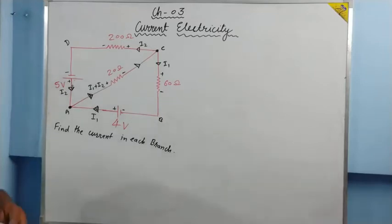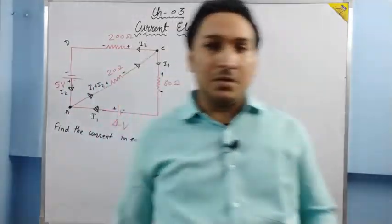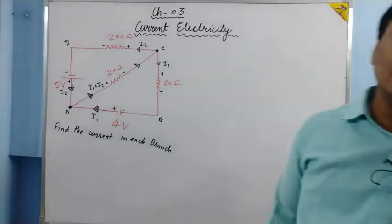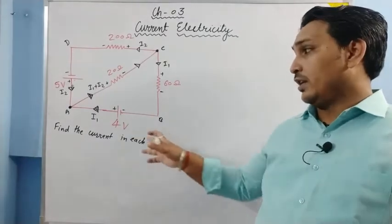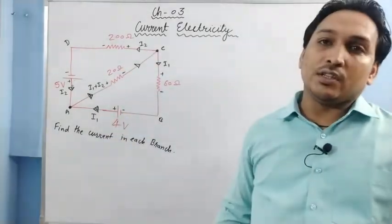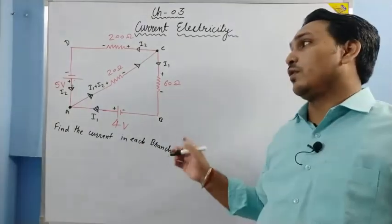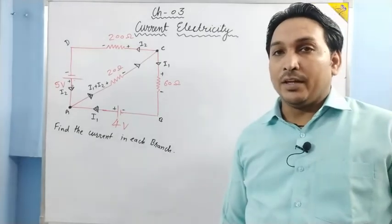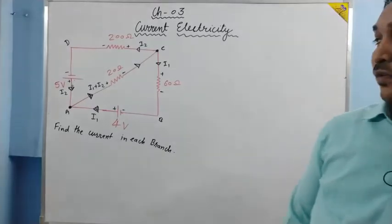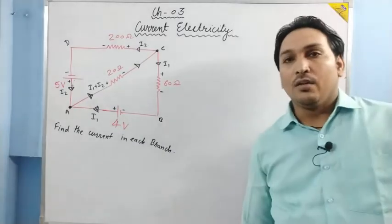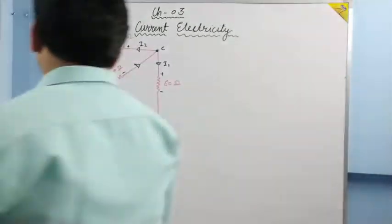One very important thing about Kirchhoff's law: the division of current assumed here is not necessarily the same as in the textbook. The variation in assumption can take place, but ultimately when we apply the law and solve, we will get the same answer. Now let us take the first loop and try to solve the question.